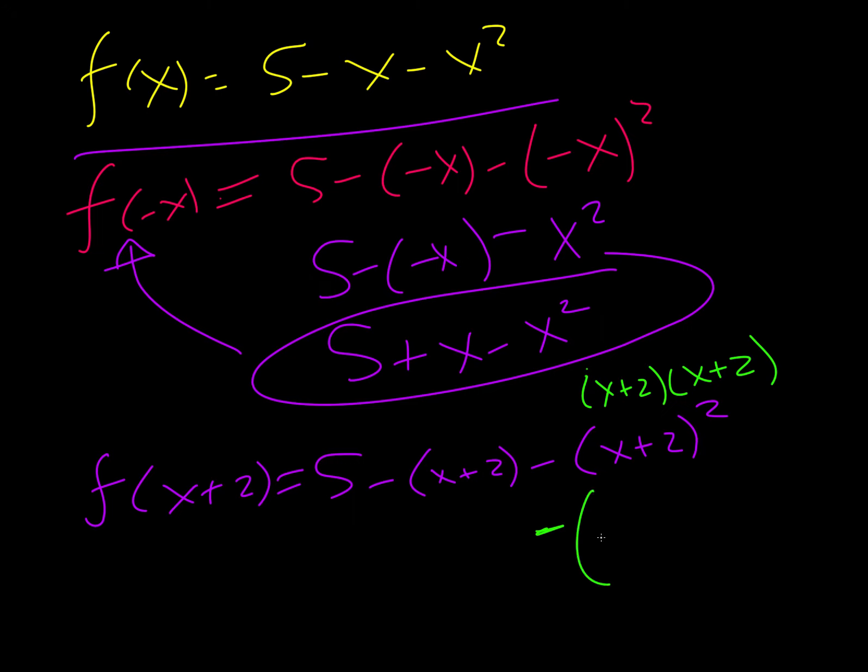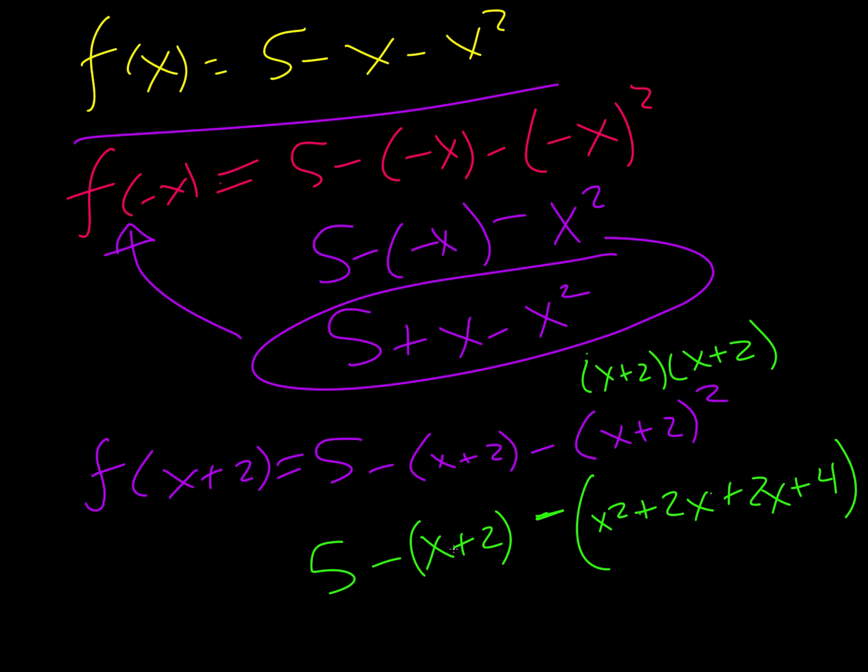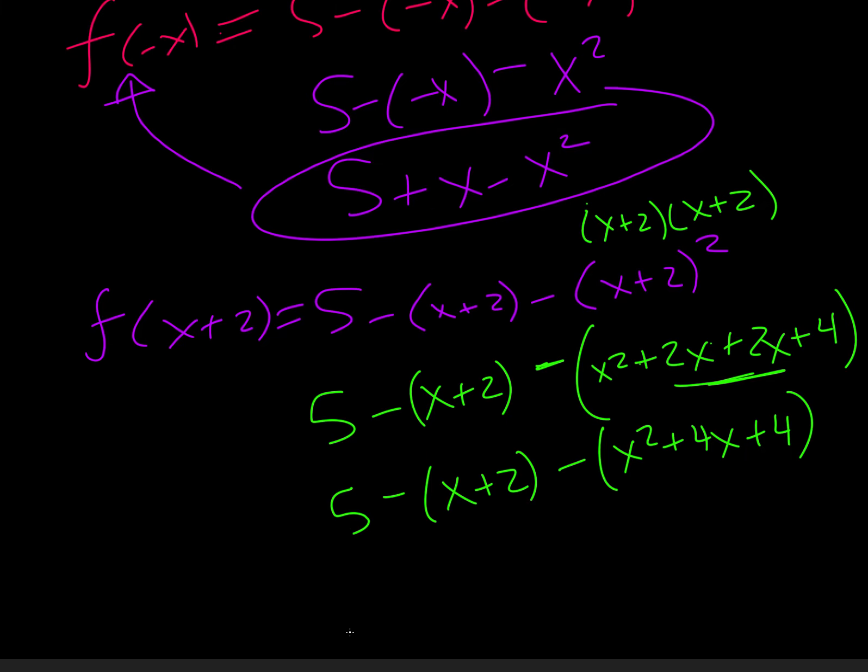So I still have this negative, but then I'm going to get x squared plus 2x plus 2x plus 4. So I'm going to just get x squared plus 4x plus 4. I just combine like terms.